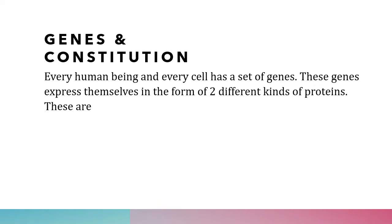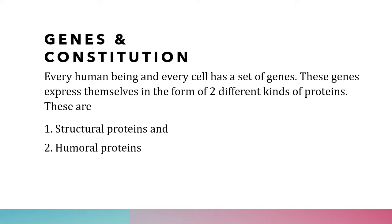Every human being has a set of genes. These genes express themselves in the form of two different kinds of proteins: structural proteins and humoral proteins. The structural proteins give rise to the physical structure, and the humoral proteins give rise to the basic nature, emotions, and behavior of the person. About one-fifth of the proteins in every individual differ from other individuals. This one-fifth makes that individual different from others, even though all human beings have the same basic physical structure — two eyes, two arms, two legs, etc. Every individual's nature, reaction to stimulus, and emotions will differ from others.